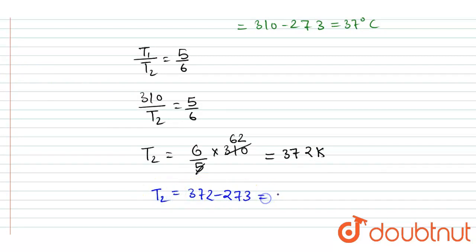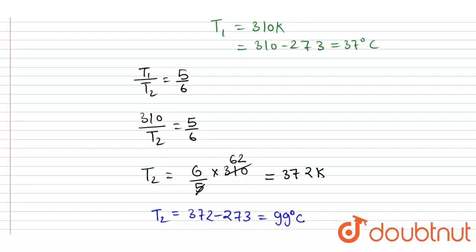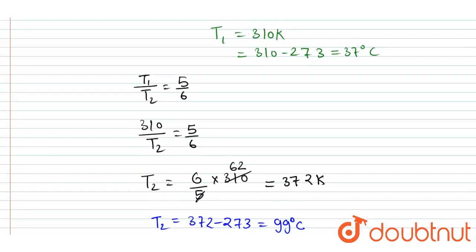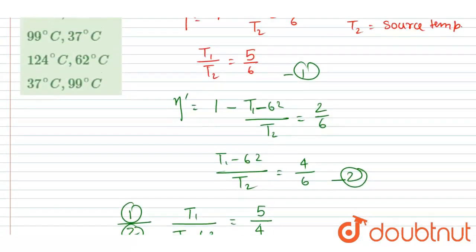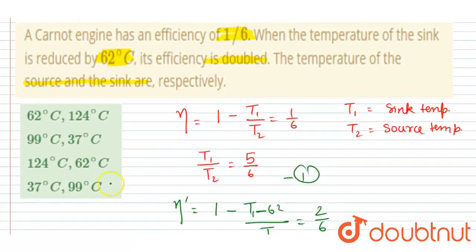and I will get T₂ in degree Celsius as 99°C. Now you can see we found the sink temperature 37 and source temperature 99, so just see the option: 37 and 99. So the correct option is this.